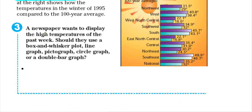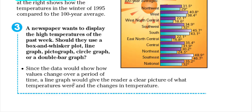Let's take a look at example three. A newspaper wants to display high temperatures of the past week. Should they use a box and whisker plot, a line graph, a pictograph, a circle graph, or a double bar graph? Since we are talking about time — comparing temperatures over the past week — the best graph to use is a line graph. A line graph gives the reader a clear picture of what temperatures were and changes in temperature. When you see time, a line graph is always the best graph to use.